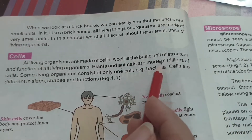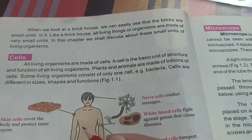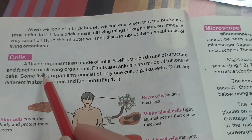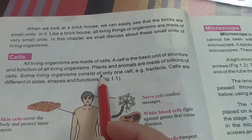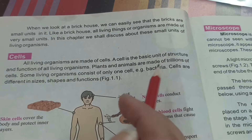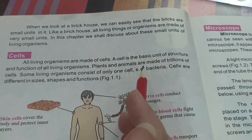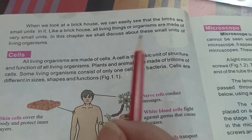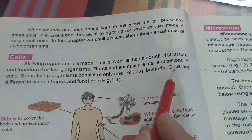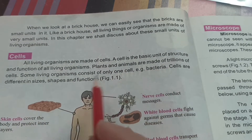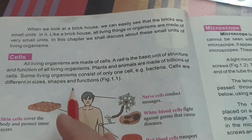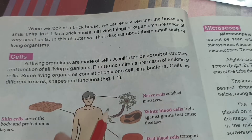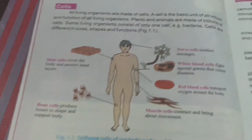Plants and animals are made of trillions of cells — such a large number that we cannot even imagine it. That cell is too small; we cannot see it with the naked eye. Some living organisms consist of only one cell, for example bacteria. Bacteria are parasites and consist of only one cell. Cells are different in sizes, shapes, and functions according to what they need to perform.